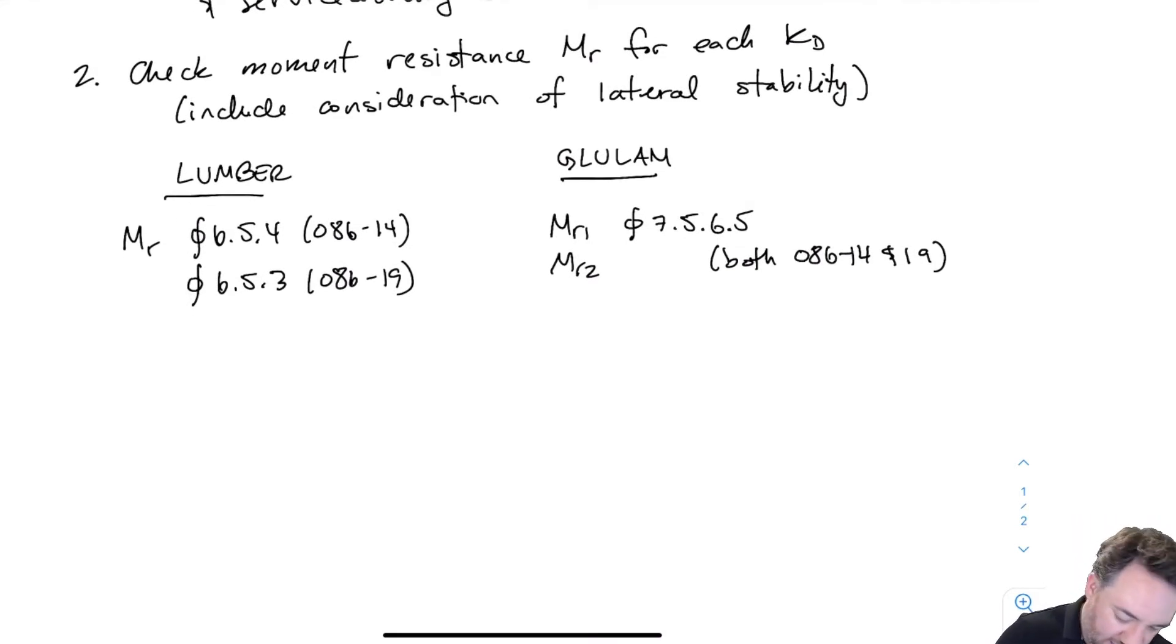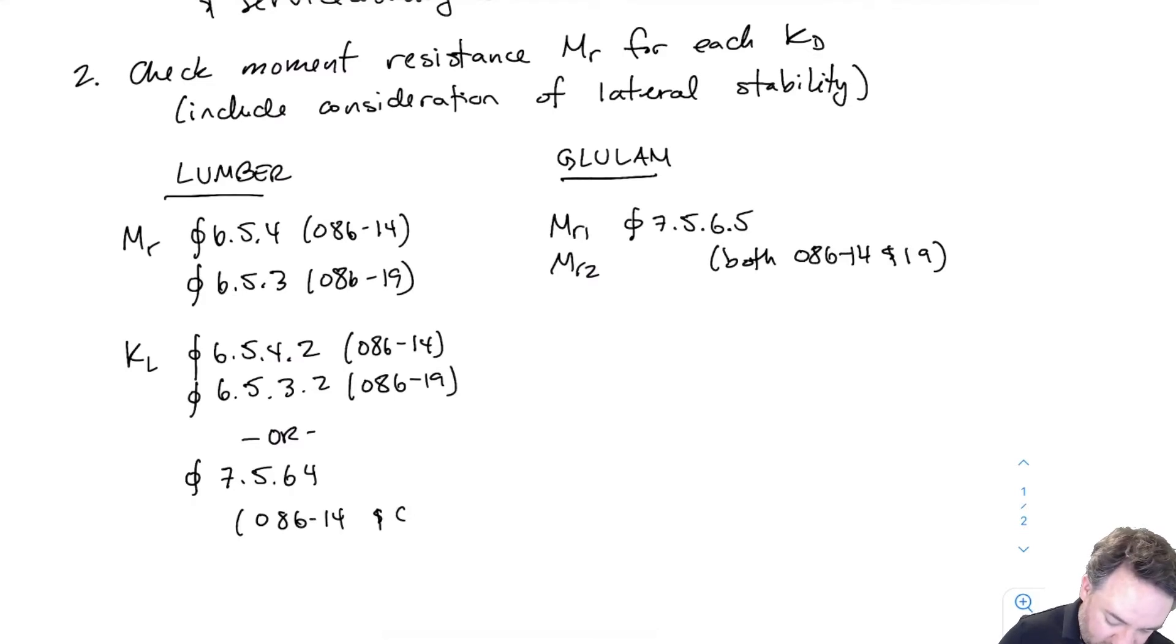For those MRs, often we need to do a KL. For lumber, we have a KL check where you'll recall we see if we have our dimensions and our aspect ratio and our boundary conditions for lateral stability. If they fit a certain set of criteria, then we can say that KL equals one. And that's what's found in 6.5.4.2 and 6.5.3.2. But then recall as well that if I don't fit those criteria and KL does not equal one, then I use the glulam method to check for KL instead, which is clause 7.5.6.4 for both 086-14 and 086-19.